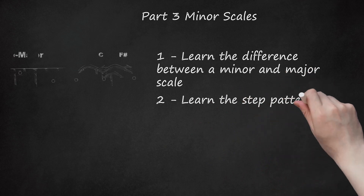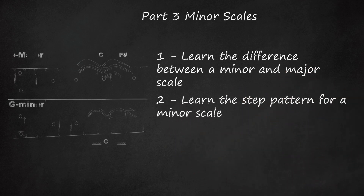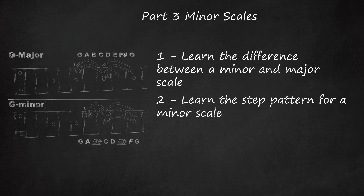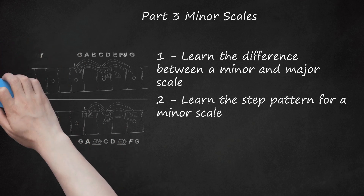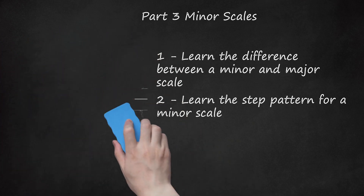Learn the step pattern for a minor scale. Having a flat 3rd, 6th, and 7th changes the step pattern from the major scale. The step pattern for a minor scale, starting from the root, is: whole step, half step, whole step, whole step, half step, whole step, whole step. For example, to make a G minor scale, start with the G major scale (G, A, B, C, D, E, F-sharp, G) and move the 3rd, 6th, and 7th degrees down a half step each, giving you G, A, B-flat, C, D, E-flat, F, G.